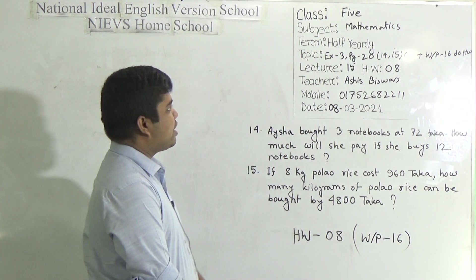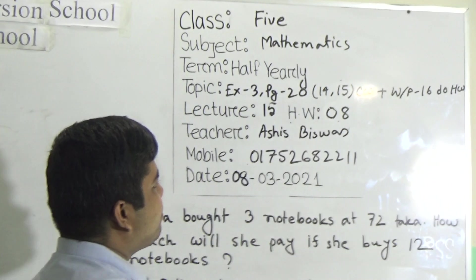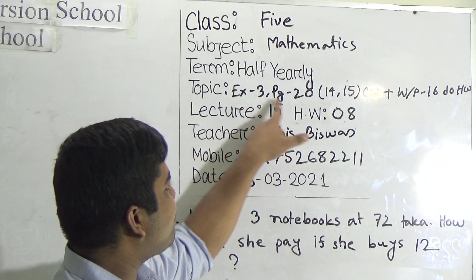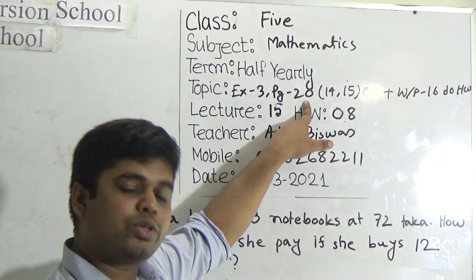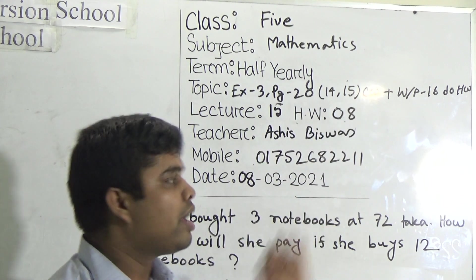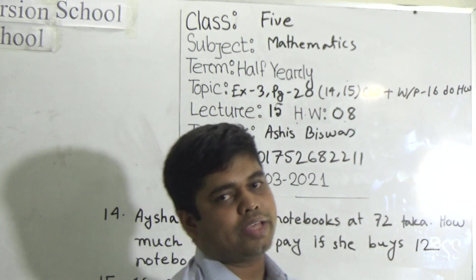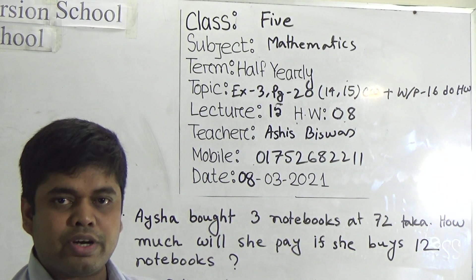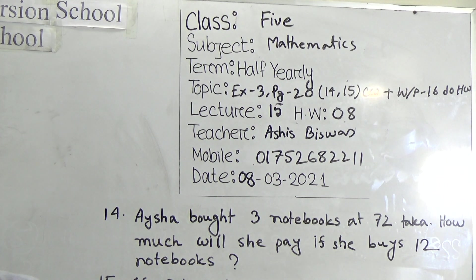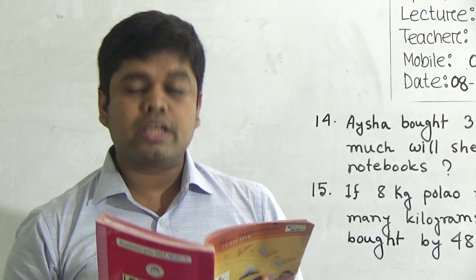My dear students, today is our lecture number 15 of half yearly and today's ASW number will be 8. Our today's topic is exercise 3, page number 20. From page number 20, we shall solve two odd problems, odd problem number 14 and 15 as your CW. And odd problem number 16 will be your SW. I repeat, odd problem number 16 will be your SW. So I hope you have this book. Open page number 20 and we shall solve question number 14 and 15.